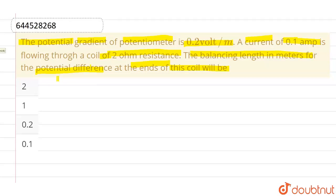Now this is a very easy question. Just what we have to do, as we know that potential gradient, what exactly potential gradient denotes? That this is the potential drop per meter. 0.2 volt per meter. This is the potential drop. So, let's say 0.2 volt per meter is the potential drop.